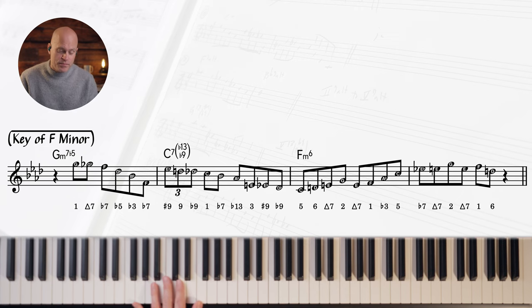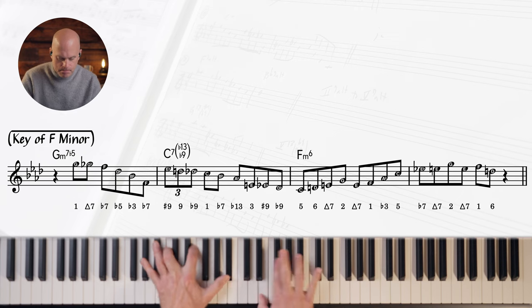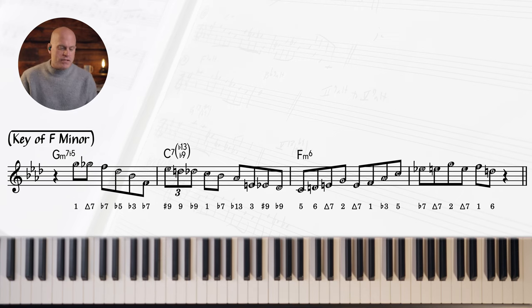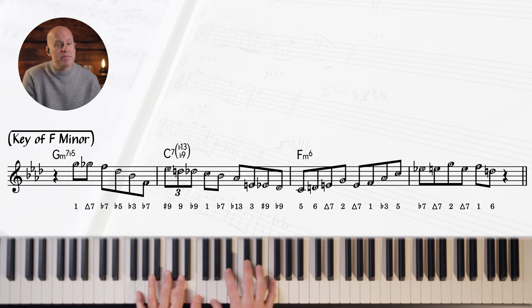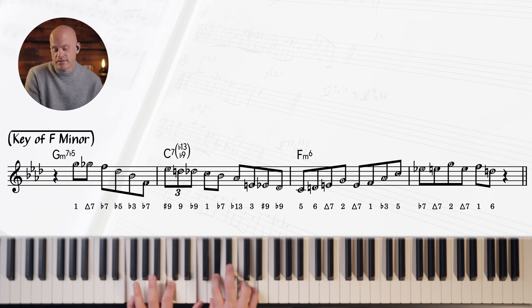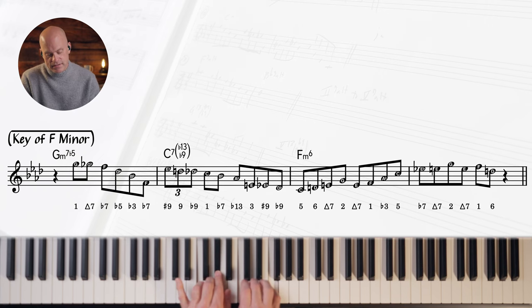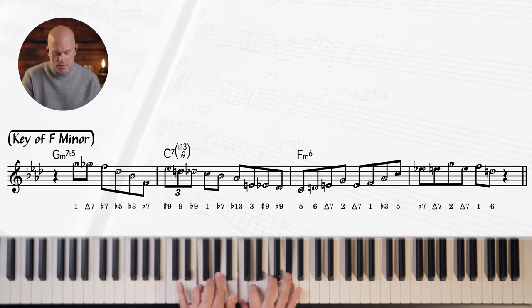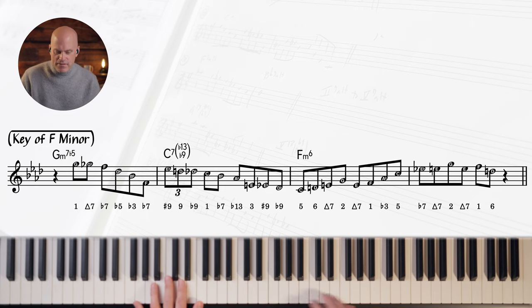That's some Barry Harris. Let's see what's going on here. Got a G half diminished, C7 flat 9, flat 13. We'll just say altered. And F minor. F minor 6. I'm just going to say F minor. You know what I mean.